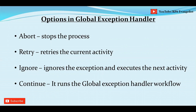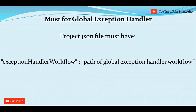The four main options in global exception handler are: Abort - stops the process; Retry - retries the current activity a configurable number of times; Ignore - ignores the exception and executes the next activity as if nothing happened; Continue - runs the global exception handler workflow. Also, in your project.json file, you'll find a key called 'exception handler workflow' whose value is the path where your global exception handler is placed.